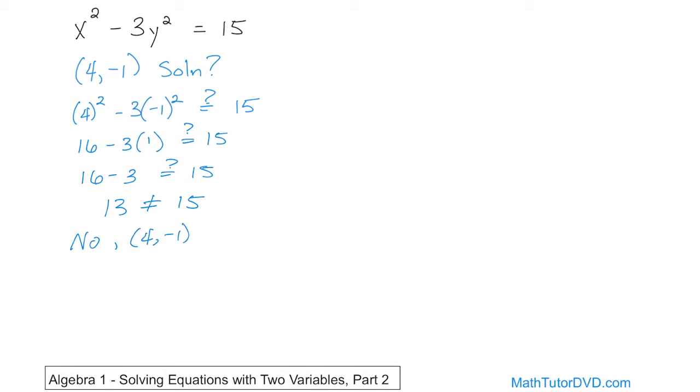4 comma negative 1, not a solution. Now, let's go over here and try a different one. Let's say negative 4 comma positive 1. Is that a solution? Yes or no? All right, so we're going to do the same thing. We're going to stick the x value in, we're going to stick the y value in.